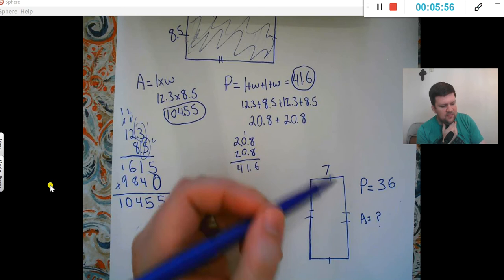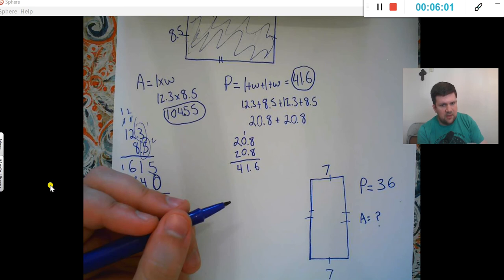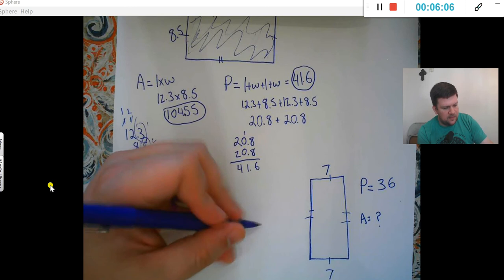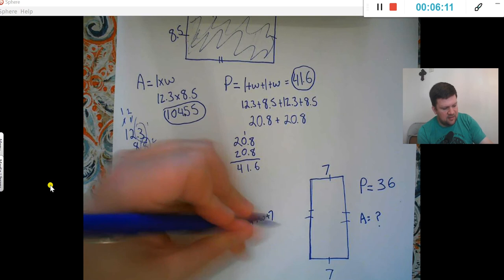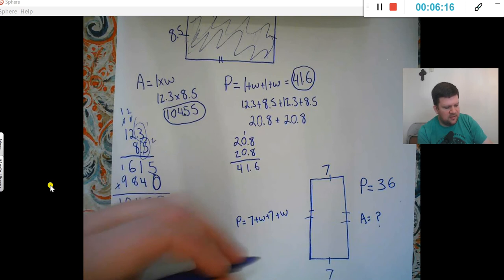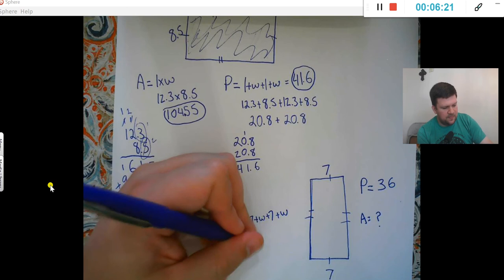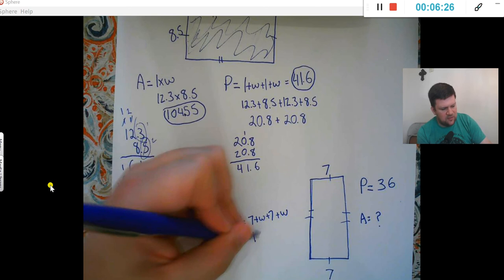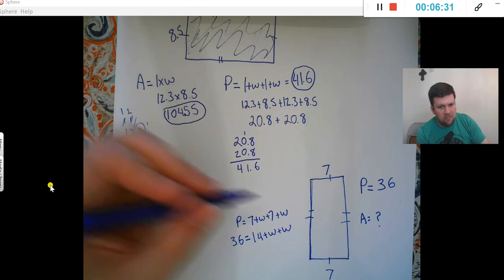So, here's how you would go about figuring that out. If this is 7, that means this side over here also has to be 7. So, that means perimeter would be 7 plus width plus 7 plus width. And we know perimeter is 36, so that means 36 equals, and I'll go ahead and combine these. 7 plus 7 is 14 plus 2 of the widths.